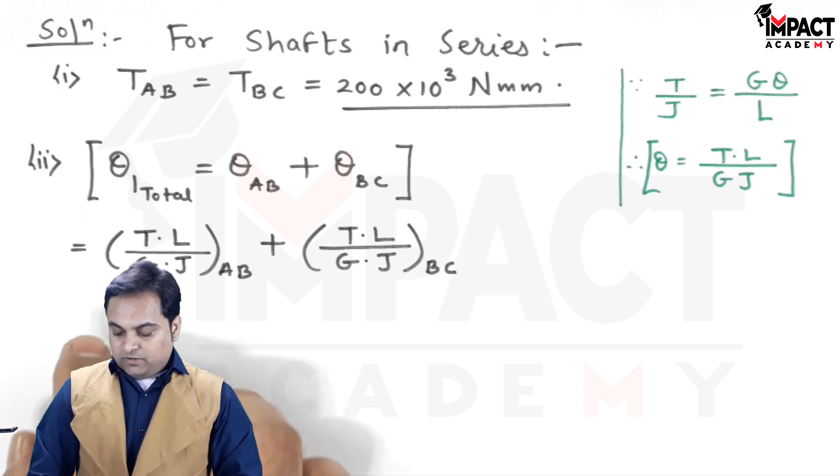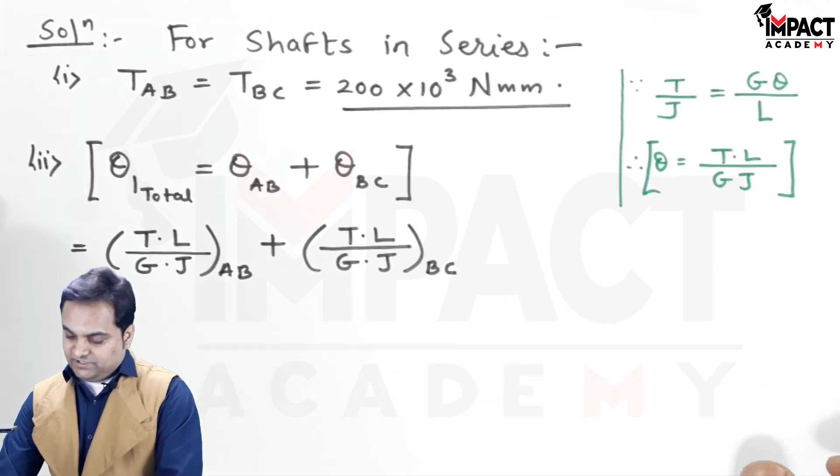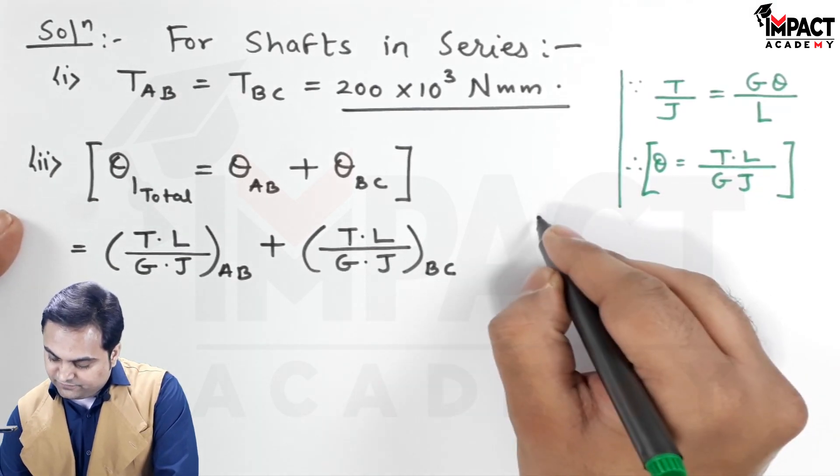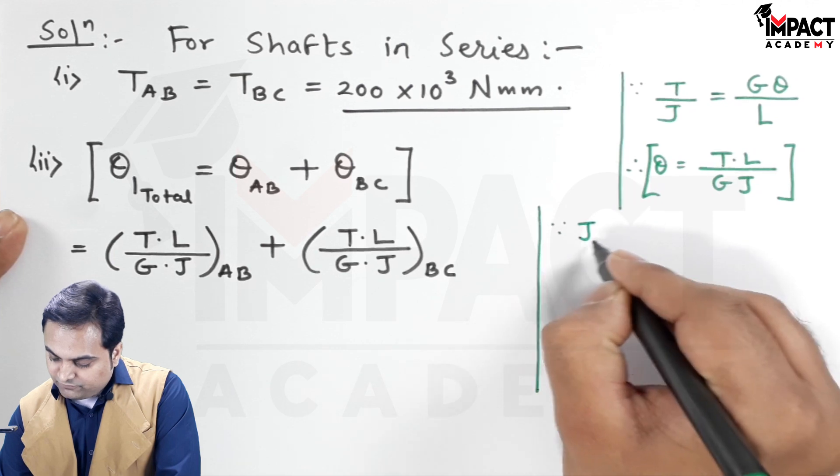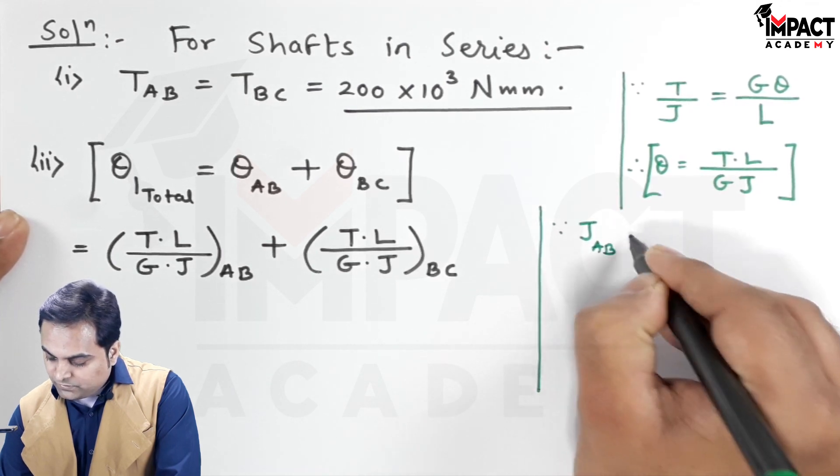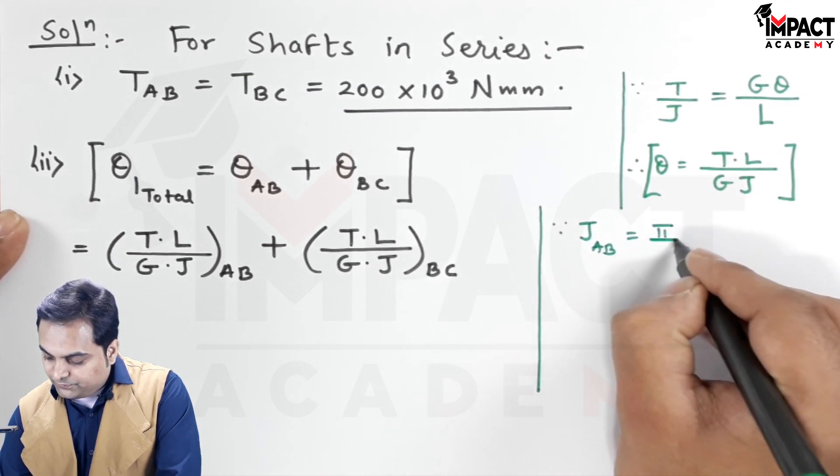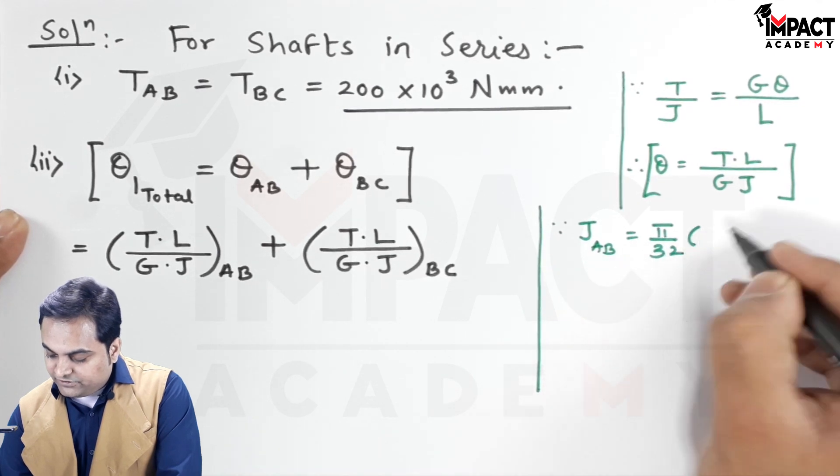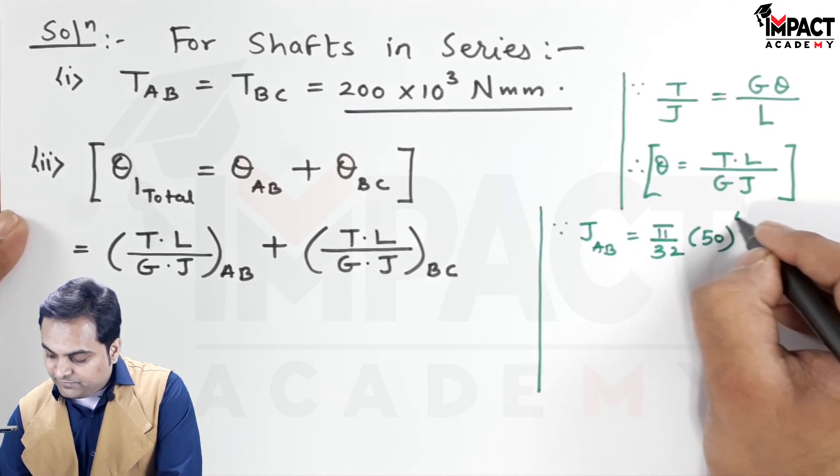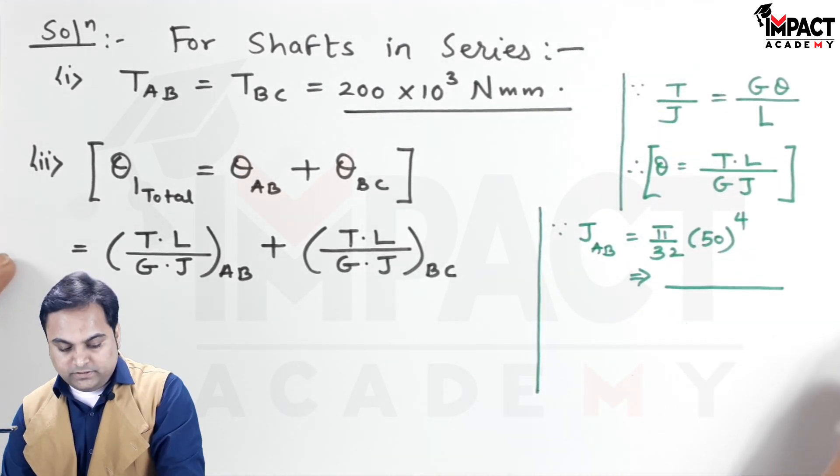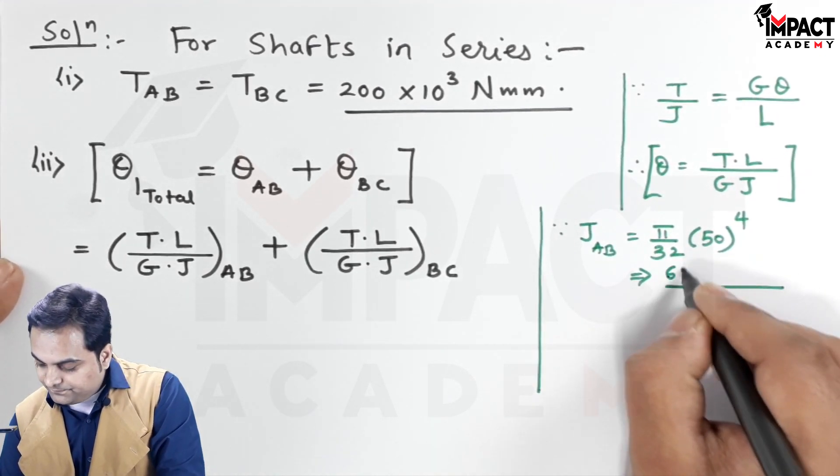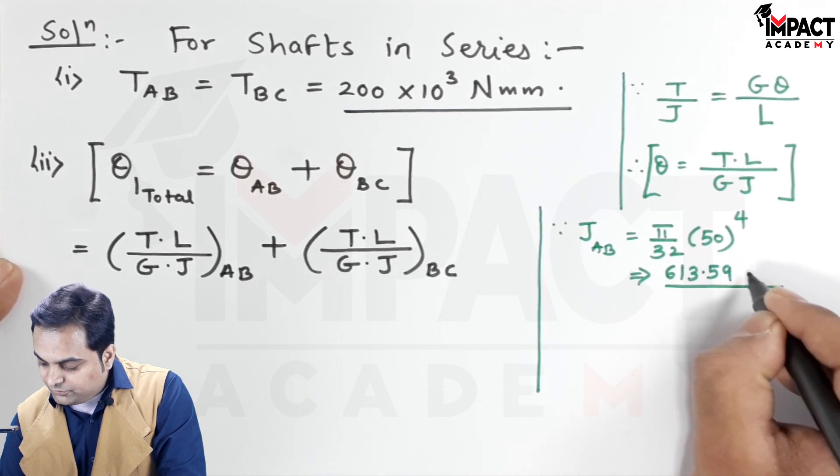Since J for portion AB is π/32 × D⁴, with diameter 50mm for portion AB, the answer comes out to be J_AB = 613.59×10³ mm⁴.